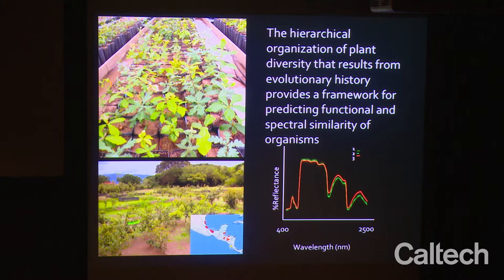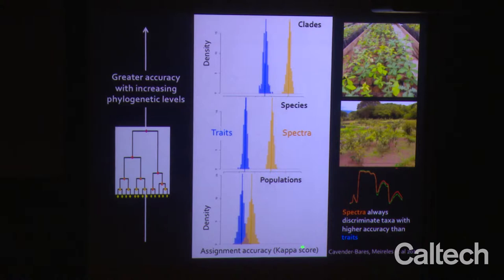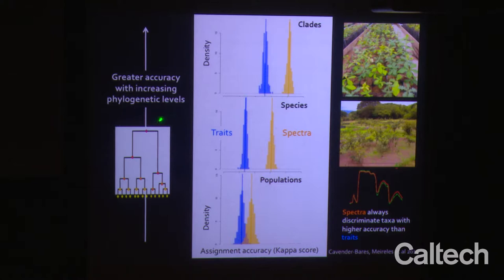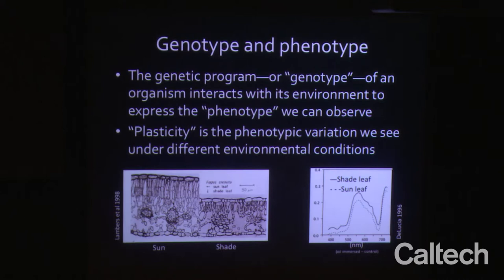We took common garden experiments where populations grow in common environments, factoring out environmental variation at species and clade levels. We looked at spectra in all those species and found we can significantly differentiate populations from each other with spectra, and also species and clades. As we get to higher-order clades, we predict we can differentiate those better than we can populations or even species. Everybody wants to be able to differentiate species, but what if we can differentiate higher-order lineages? That seems valuable too.